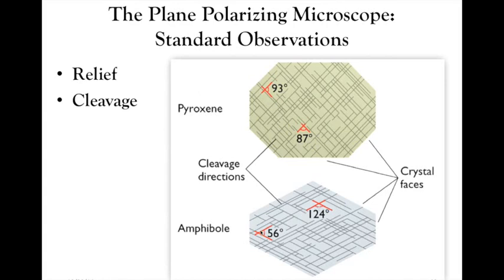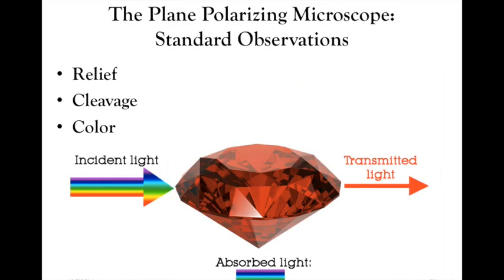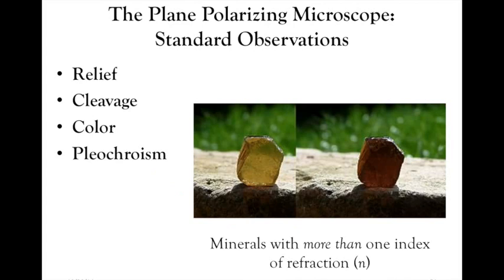For color, incident light out of the microscope is white light with all wavelengths of the visible spectrum. The crystal can act like a filter by absorbing certain wavelengths — a red crystal transmits only red because everything else has been absorbed. Related to this, we can also observe pleochroism in minerals that have more than one refractive index. Depending on which way you look through the crystal, the refractive index can be different, causing the color to change as you look at different angles.